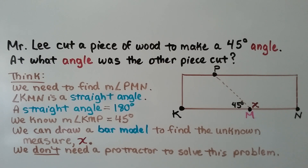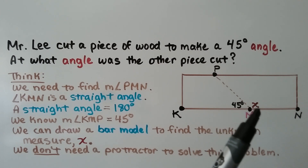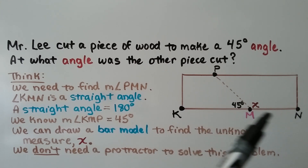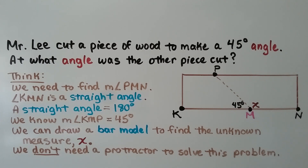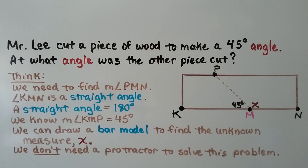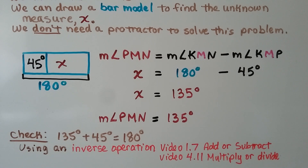Mr. Lee cut a piece of wood to make a 45 degree angle. At what angle was the other piece cut? We need to find the measure of angle PMN. Angle KMN is a straight angle, which is equal to 180 degrees. We know the measure of angle KMP is 45 degrees. We can draw a bar model to find the unknown measure x, and we don't need a protractor to solve this problem.